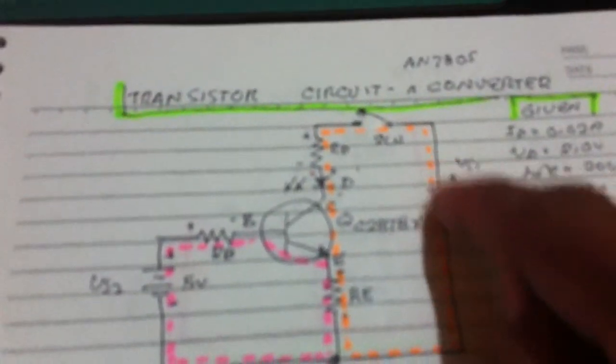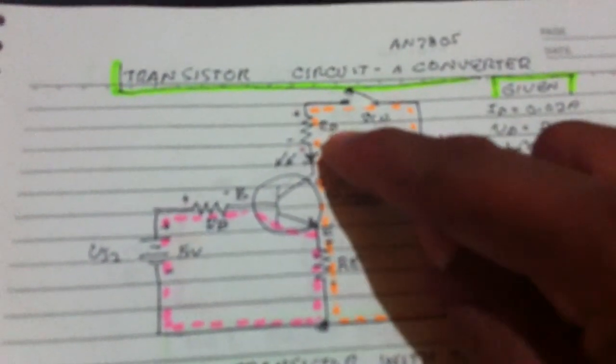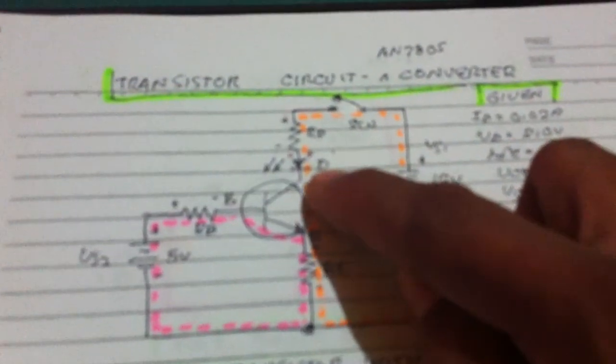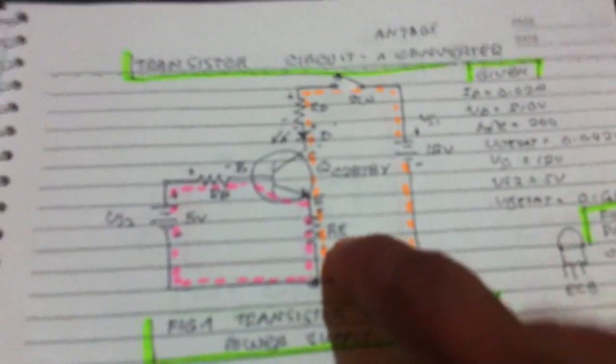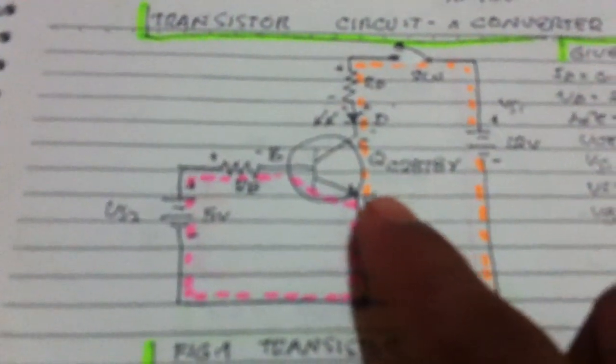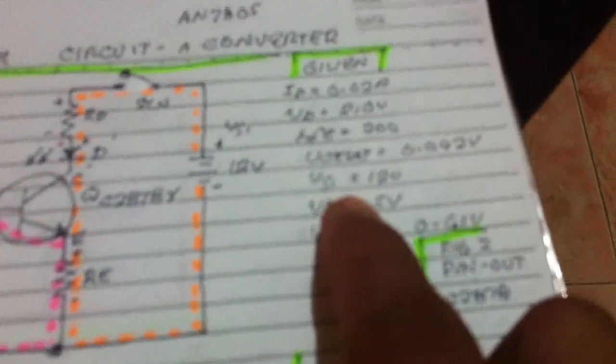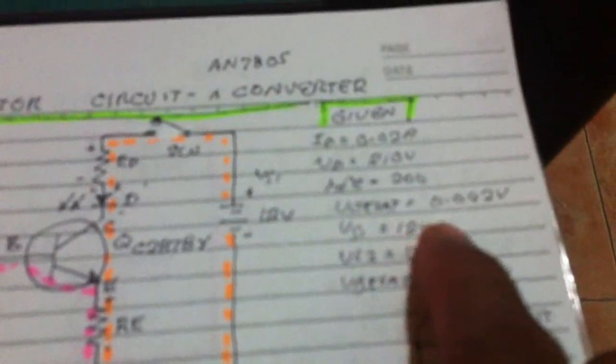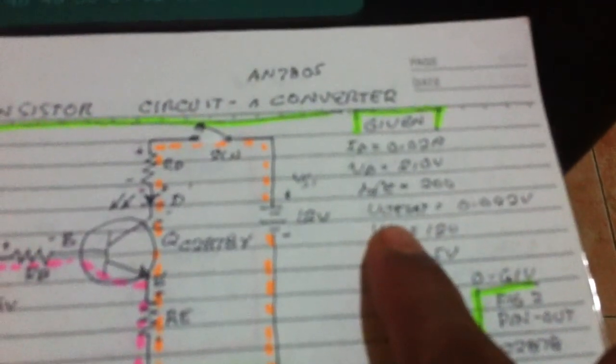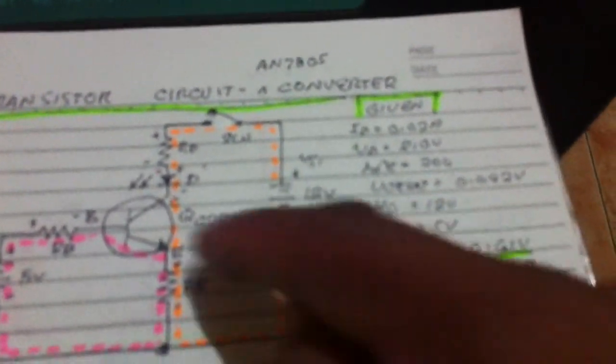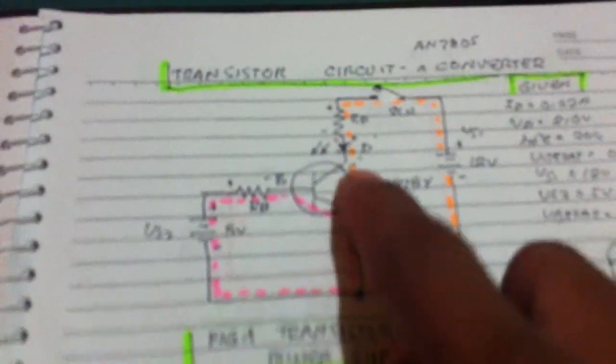Using Kirchhoff's Voltage Law around the RD loop, following the orange line: voltage supply minus voltage drop across resistor, diode, transistor, and emitter resistor. We are conducting the transistor in saturation. The collector-to-emitter saturation voltage given in the datasheet of the transistor is 0.02 volts — essentially short-circuiting the transistor.